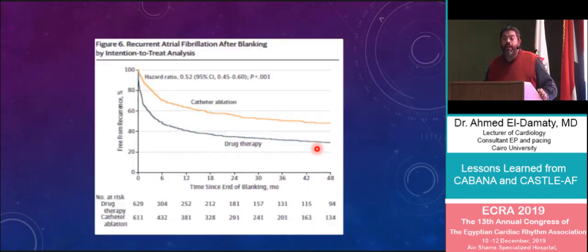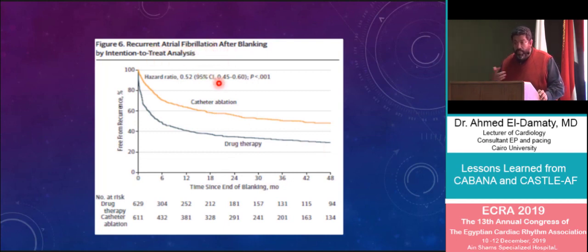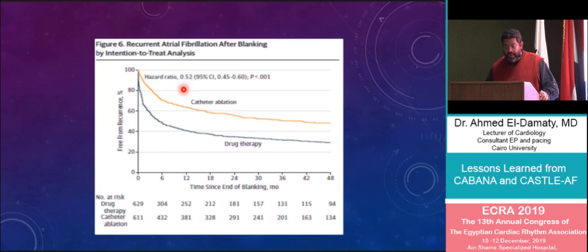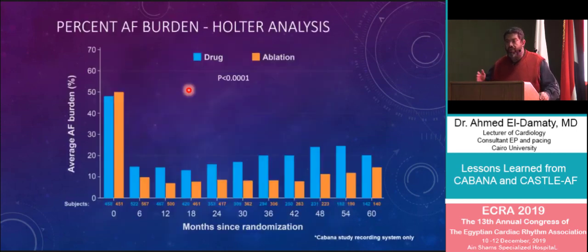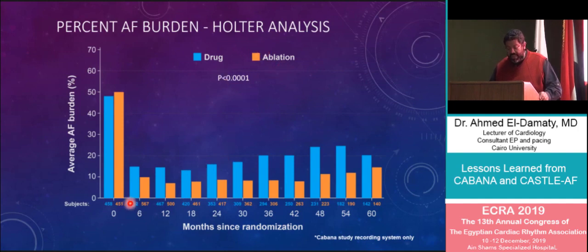The only rigorous and valid benefit in the CABANA intention-to-treat analysis was the reduction in AF recurrence and AF burden in the catheter ablation arm — a survival analysis over 48 months showing a statistically significant hazard ratio of 0.52 with a p-value less than 0.05. Looking at AF burden on serial Holter monitors, the orange bar representing the ablation arm was consistently lower after six months, while AF episodes were higher in the drug therapy arm.